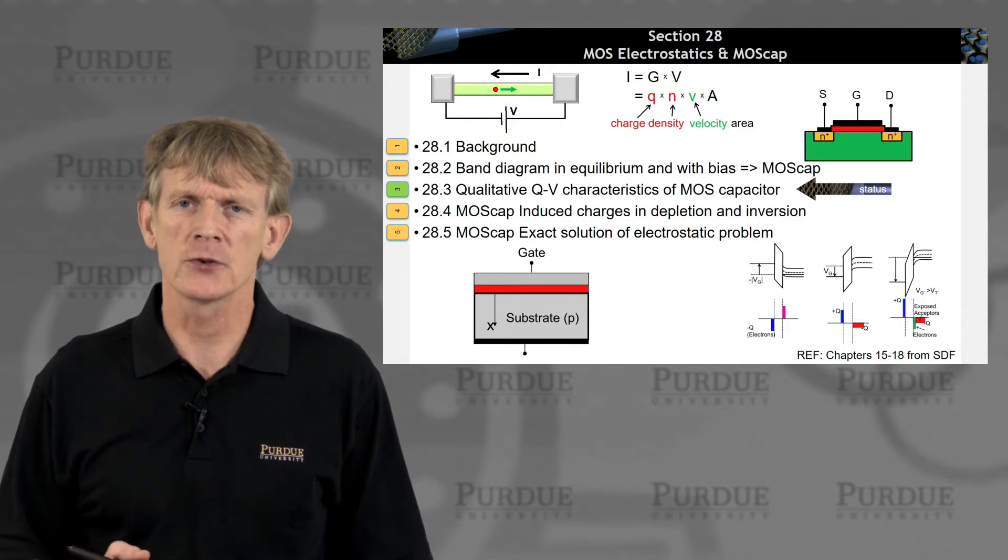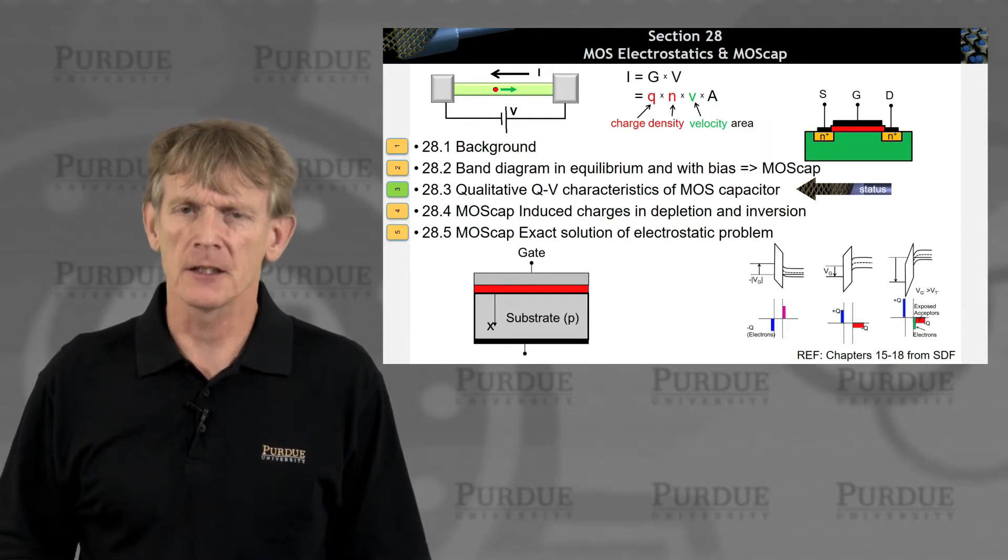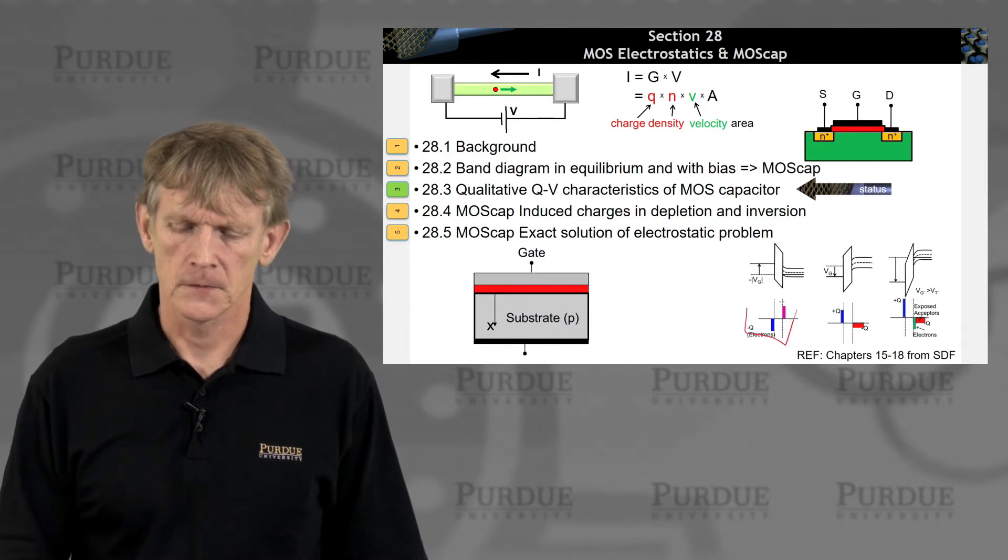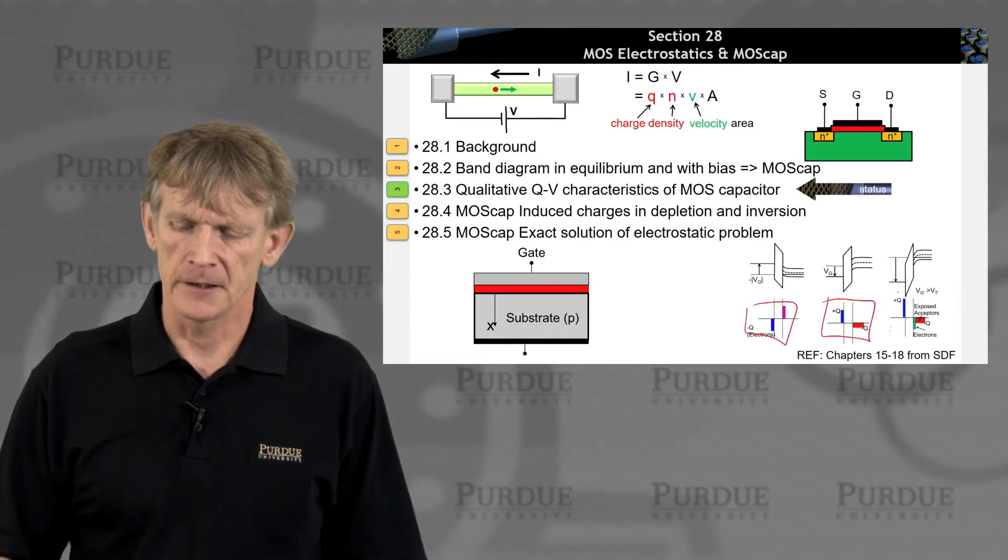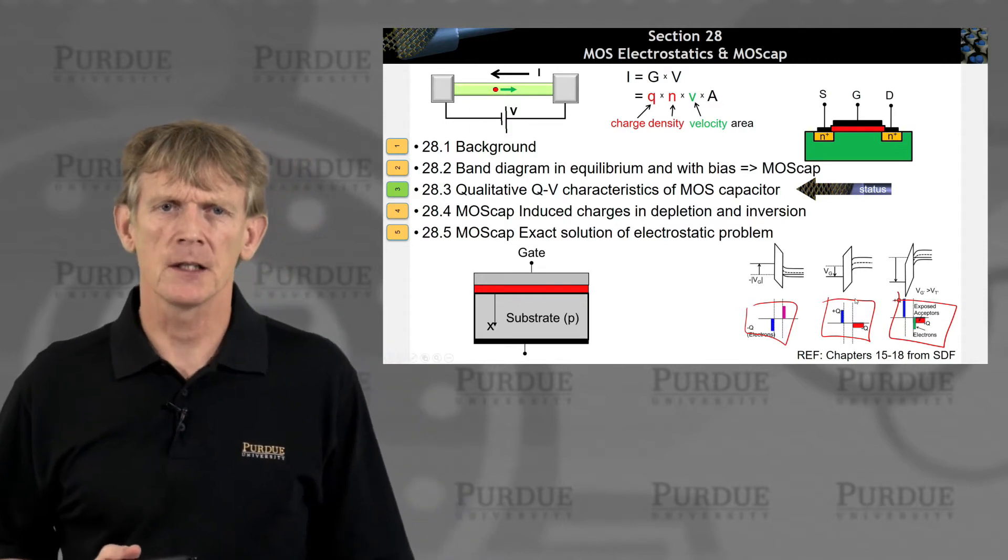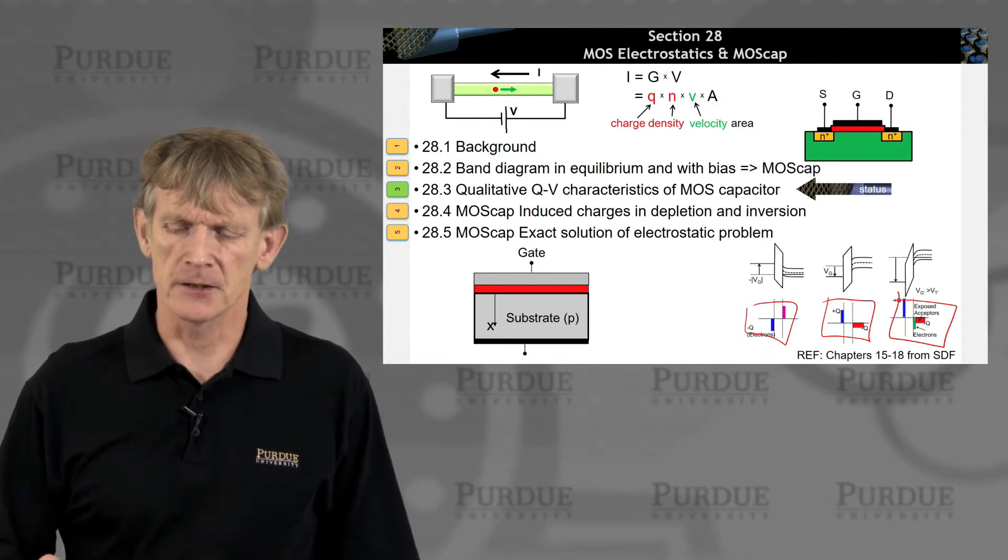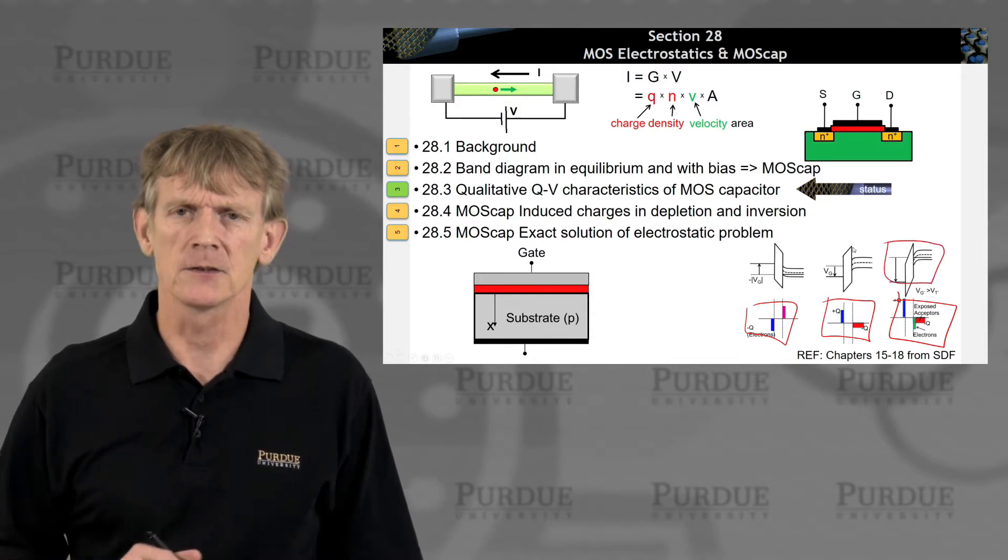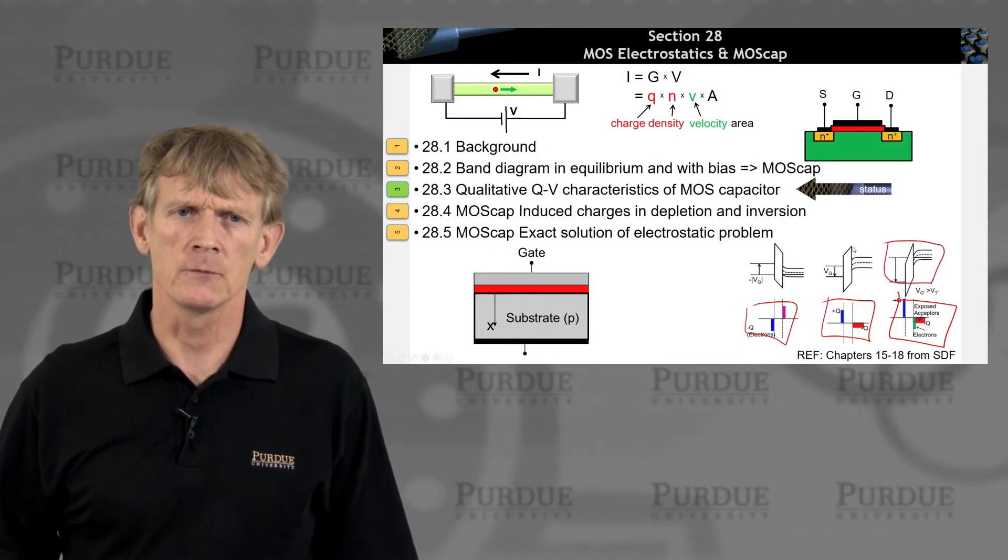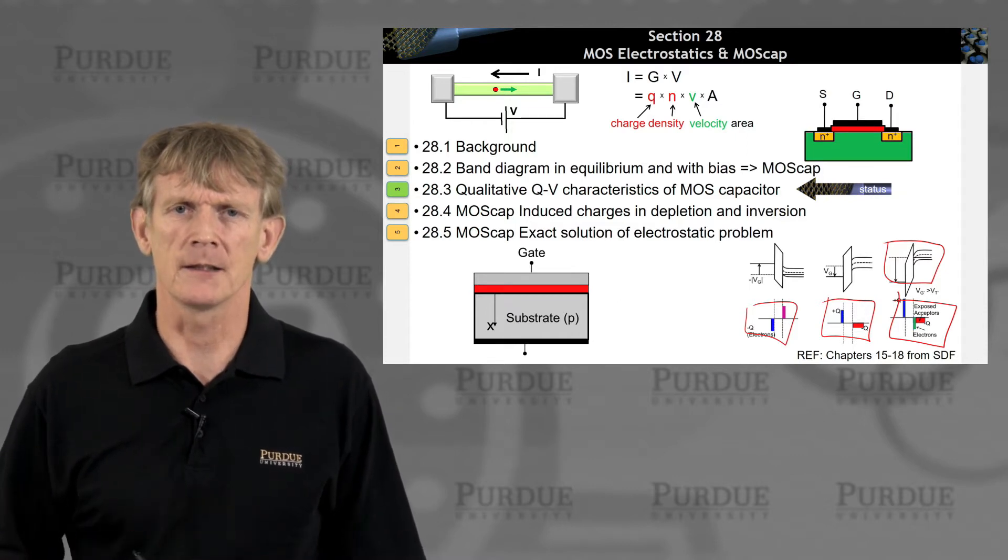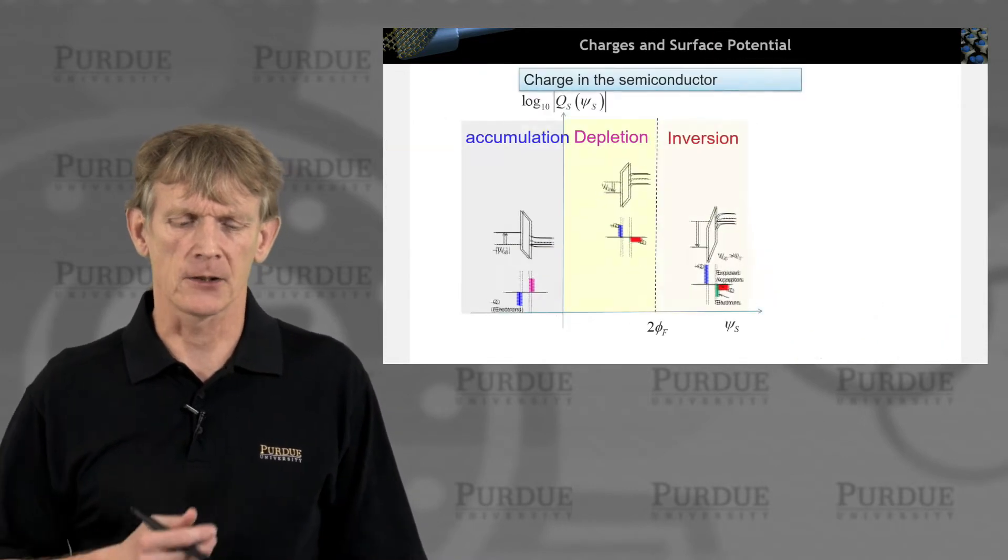We're not going to do the exact solution yet, but we will consider these regions here of accumulation, depletion, and inversion. Those three terms have to become rather familiar, and you can begin to have sketches of band edge diagrams like this in your head when we talk about inversion. You should become familiar with that, and we'll carry out some charge calculations now.